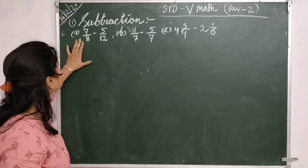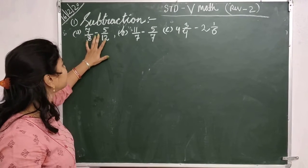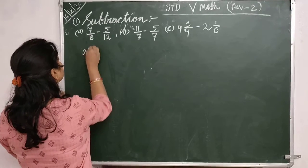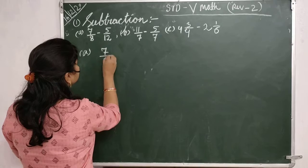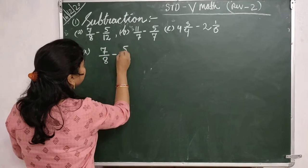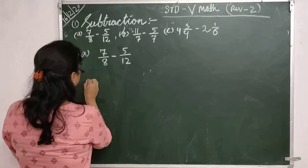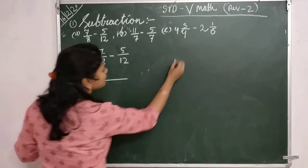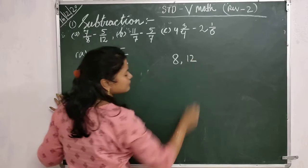Your first question is here: 7 by 8 minus 5 by 12. So children, you have to first find out the LCM of 8 and 12.